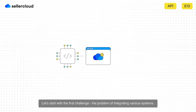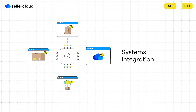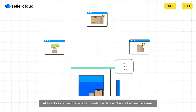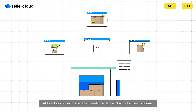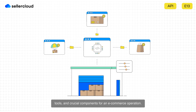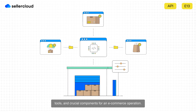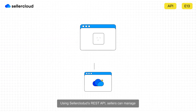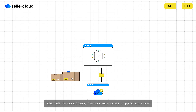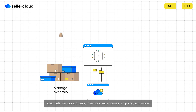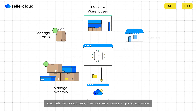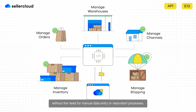Let's start with the first challenge: the problem of integrating various systems. APIs act as connectors, enabling real-time data exchange between systems, tools, and crucial components for an e-commerce operation. Using SellerCloud's REST API, sellers can manage channels, vendors, orders, inventory, warehouses, shipping, and more, without the need for manual data entry or redundant processes.